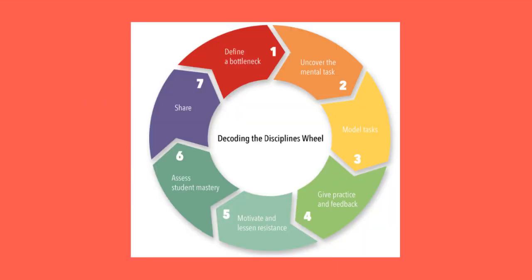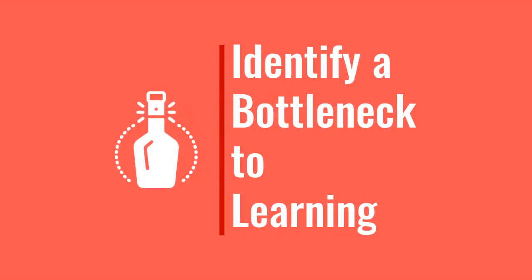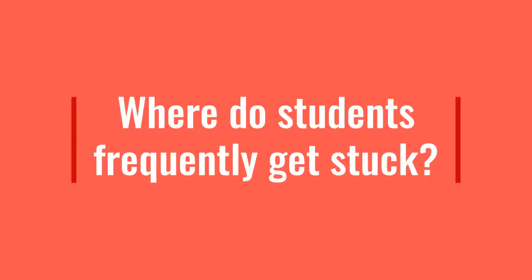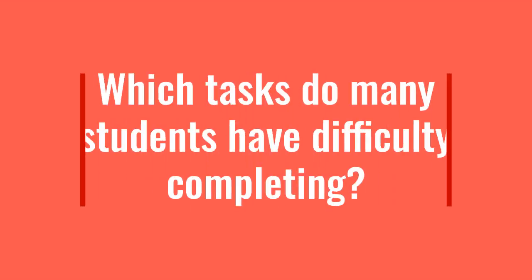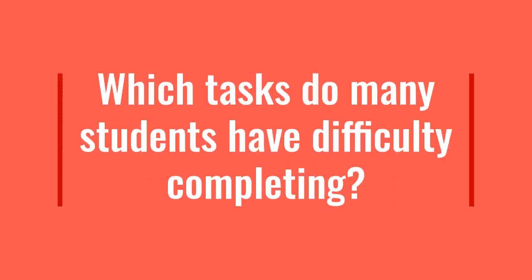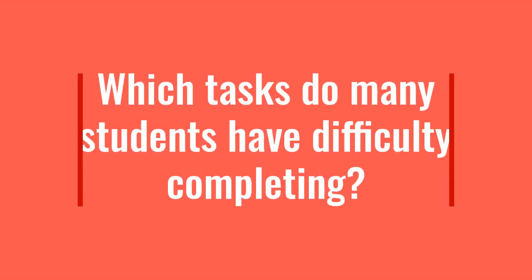The model has seven steps. The first step is to identify a student learning bottleneck. Bottlenecks can be those places within a course where students frequently get stuck, or those tasks which many students have difficulty completing.